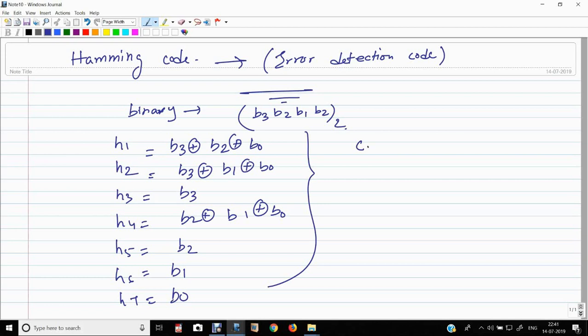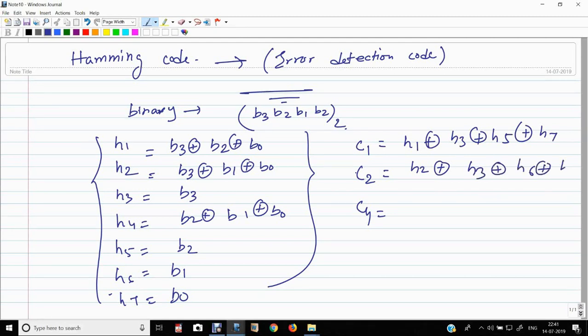Now, this is the Hamming code. This is the Hamming digits. Now, how to detect error? With C1, C2, and C4, there are three formulas of Hamming. H1 plus H3 plus H5 plus H7, H2 plus H3 plus H6 plus H7. So, I need to remember this formula.